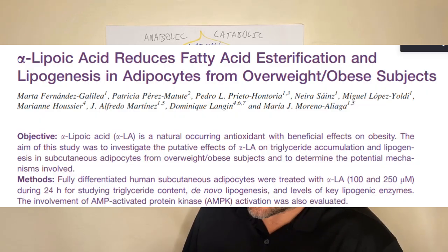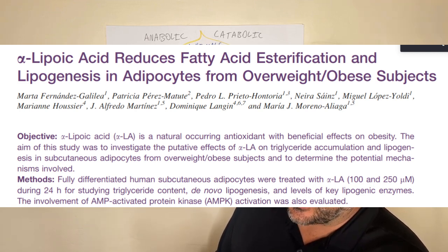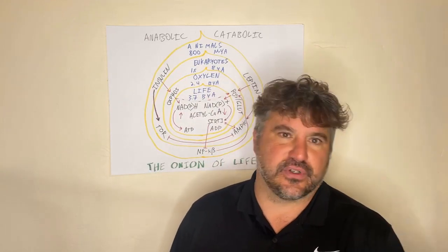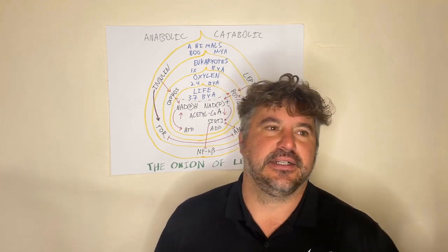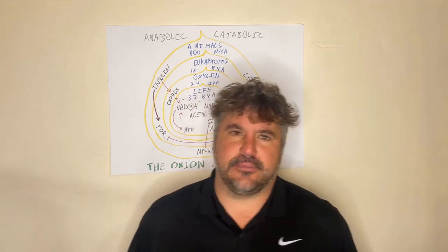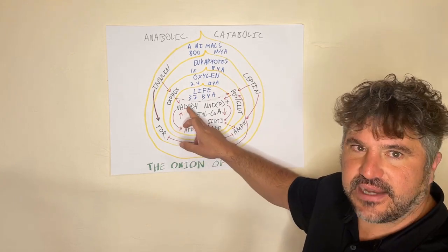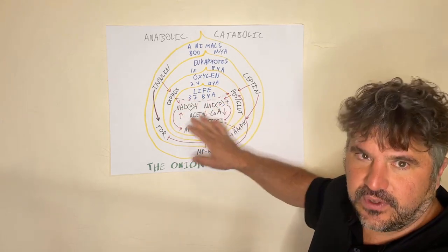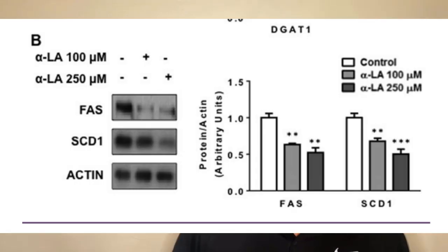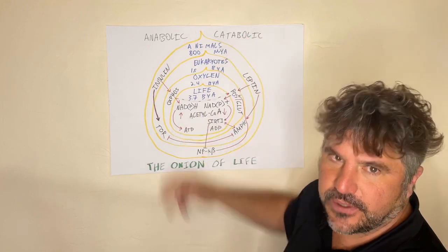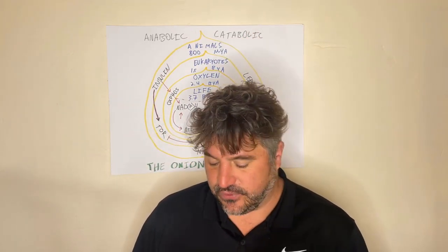In 2014, a paper came out called 'Alpha Lipoic Acid Reduces Fatty Acid Esterification and Lipogenesis in Adipocytes from Overweight and Obese Subjects.' They took liver cells from obese humans grown in tissue culture — so they didn't give humans a supplement, this was done in tissue culture. What it showed is that Alpha Lipoic Acid oxidizes NADH and converts it back to NAD+. When you oxidize the NADH pool, you go into catabolic mode, and sure enough, Alpha Lipoic Acid caused a large reduction in SCD1 levels.